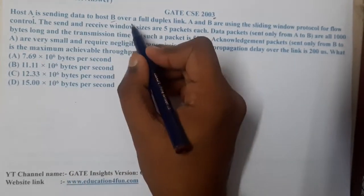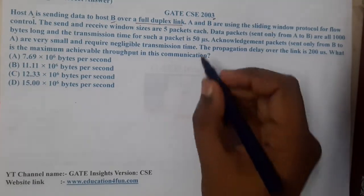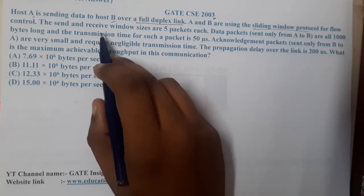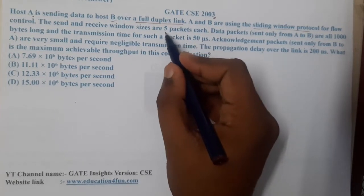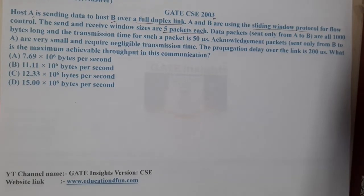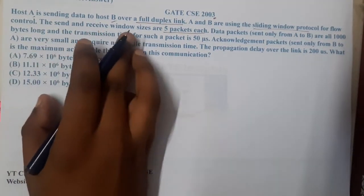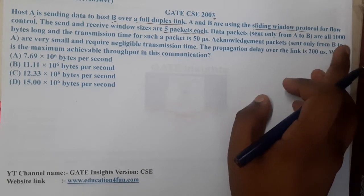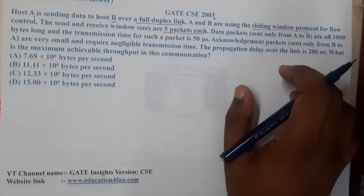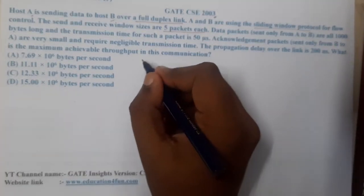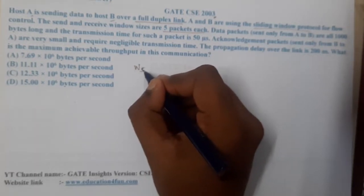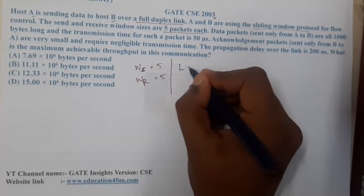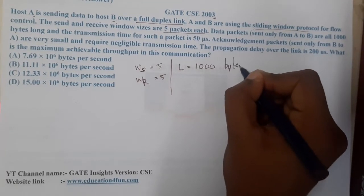Host A is sending data to host B over a full duplex link. A and B are using sliding window protocol for flow control. The sender and receiver window sizes are five packets each. Data packets are sent only from A to B and are all 1000 bytes long. So the window size of sender equals five, window size of receiver equals five, and packet length is 1000 bytes.